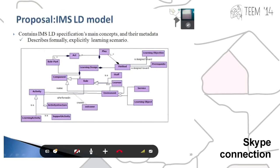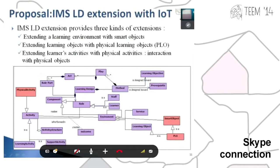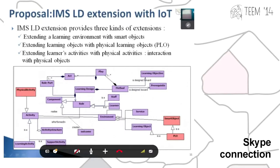For our proposal, we have the IMS LD model — a model which contains all the concepts and metadata which allow us to describe formally and explicitly learning scenarios. We have also proposed the extension of IMS LD with the Internet of Things. We have extended the learning environment with smart objects, extended learning objects with IoT learning components, and extended learning activities with IoT activities for allowing interaction with physical objects.